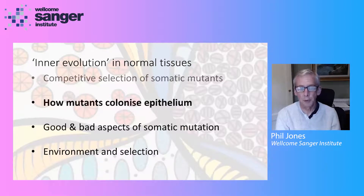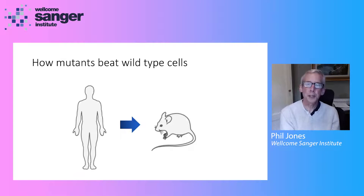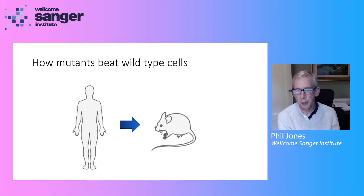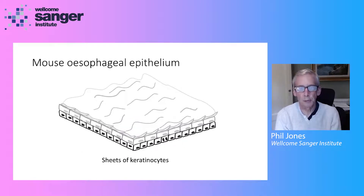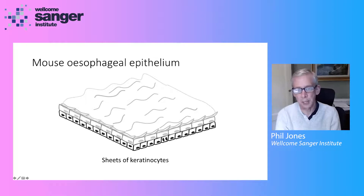So how is it that we end up with this very high burden of mutations in what appears to be a completely normal tissue? To understand this, we needed to move from studying humans to studying transgenic mice, where we have an elegant set of genetic tools that let us resolve how mutations alter cell behaviour. But first, a crash course in the mouse esophagus. Like the human esophagus, the mouse esophagus consists of sheets of a single cell type called the keratinocyte — a very simple tissue with no appendages or glands, just layers and layers of keratinocytes.